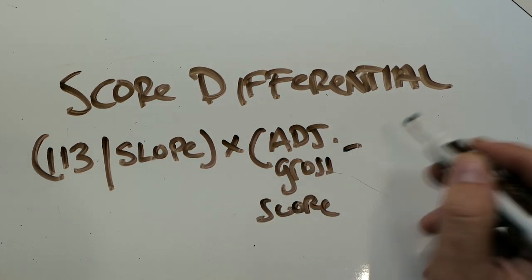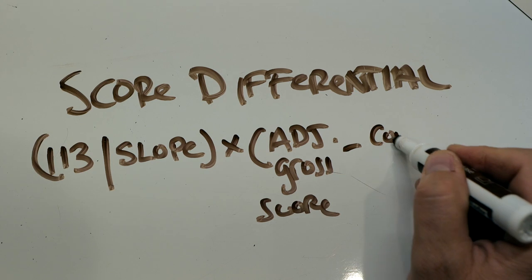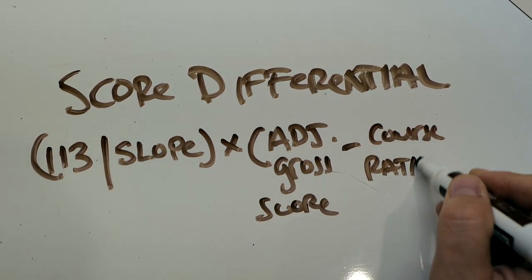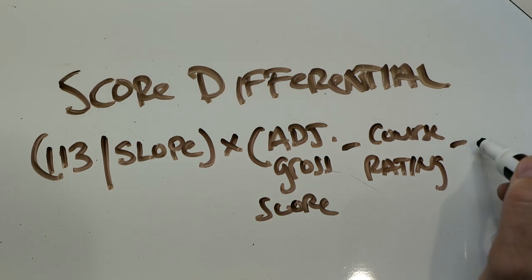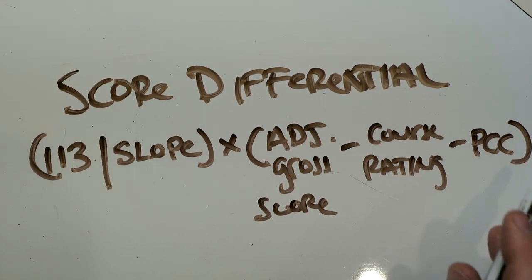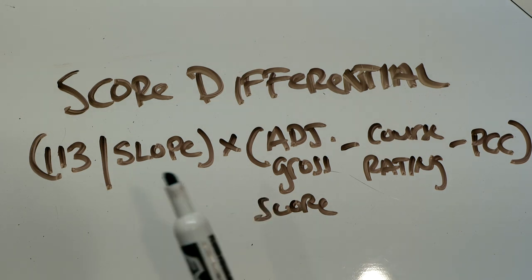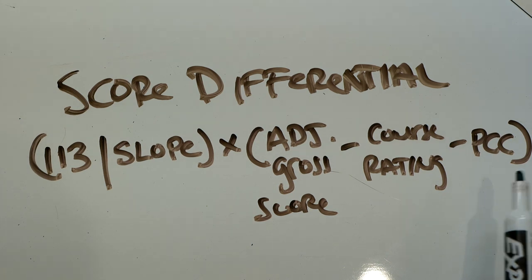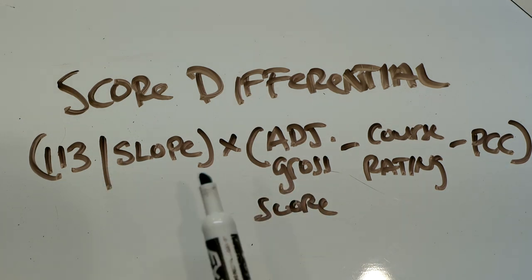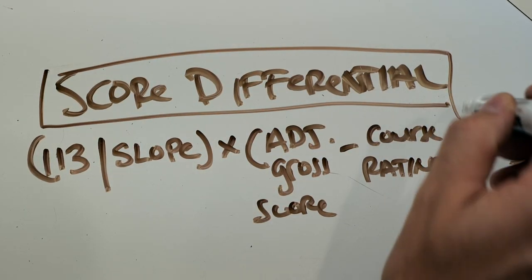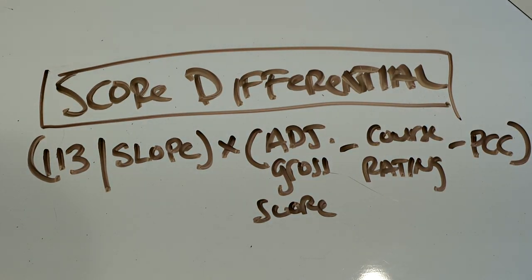Then you subtract the course rating, and you subtract something called PCC, which is basically the playing conditions that happened the day that you played. I will break all of these down — the slope, adjusted gross score, course rating, and PCC next. That is how you come up with a score differential, which is a very key concept as we create the handicap index.